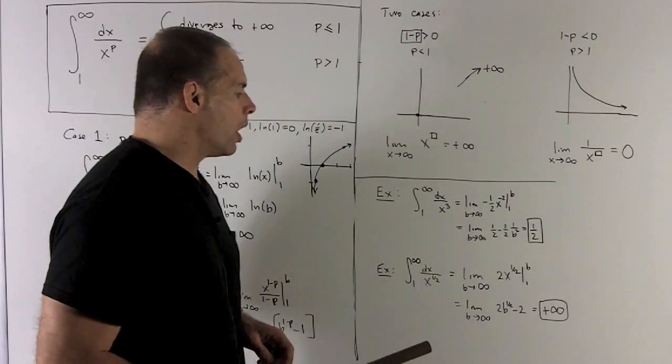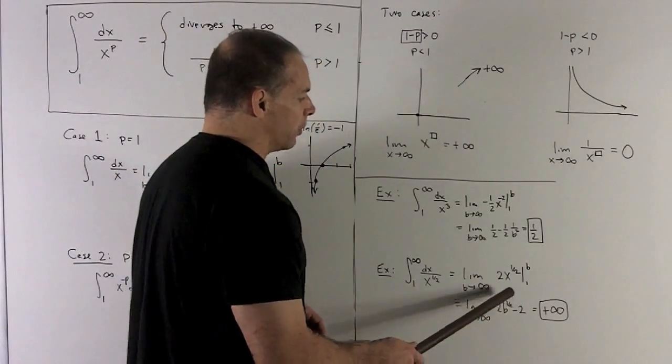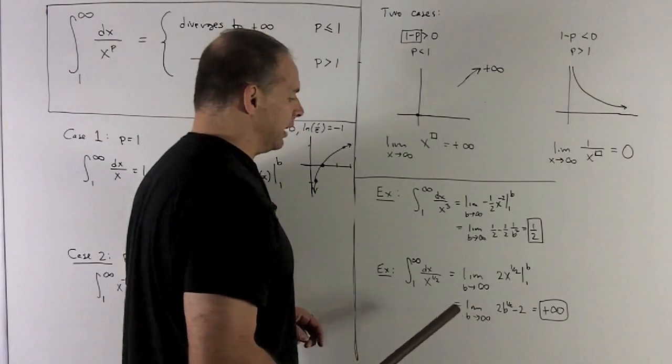We're going from b to 1. We stick them in and take the difference. That's going to give me 2b to the 1 half minus 2. We take the limit as b goes to infinity.